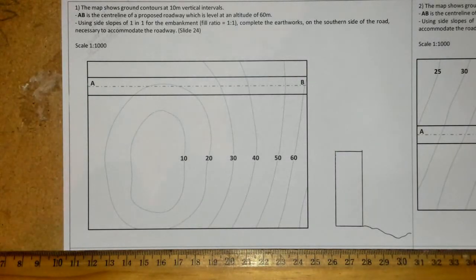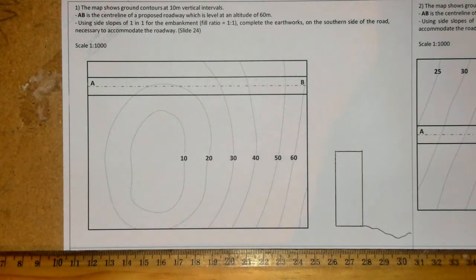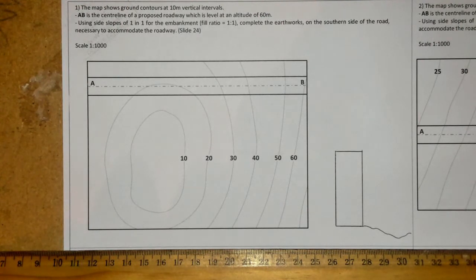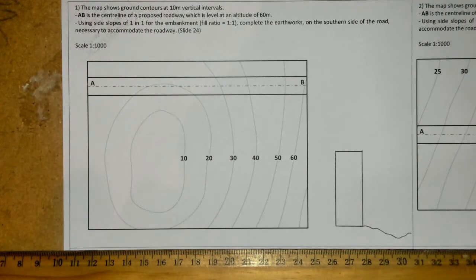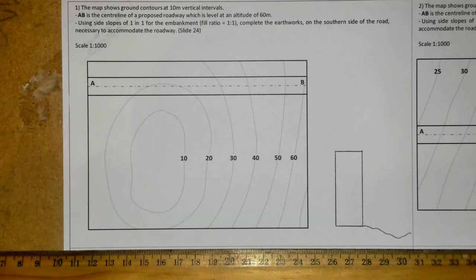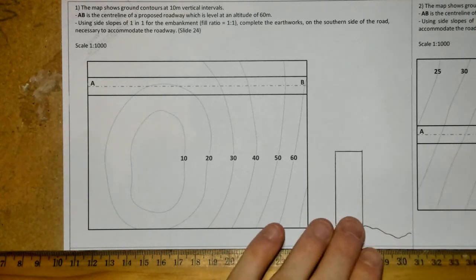Hi folks. The questions today come under the topic of geological geometry, or road geometry as it's sometimes known. These questions are from the DCG workbook on sheet 6, covering earthworks and embankments — another word for embankments being 'fills.' Cuts and fills refer to situations where a road is at a certain height and the land around it is lower, so we need to fill up to the road to keep it stable.